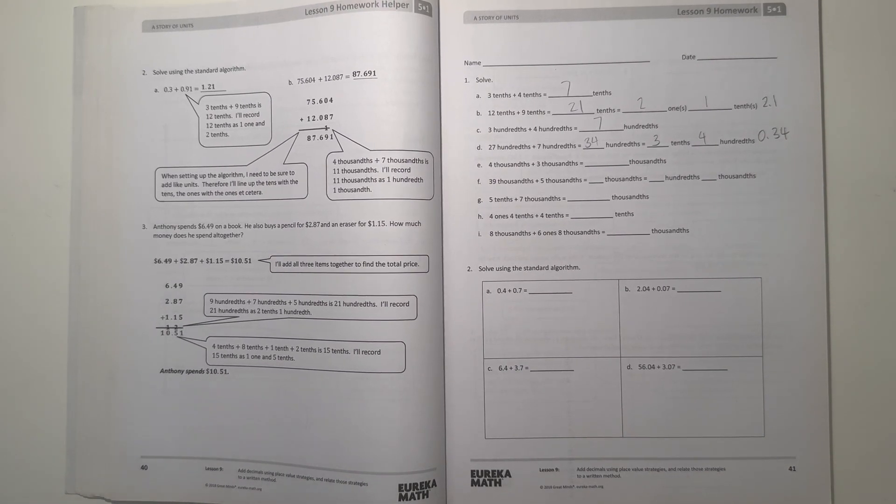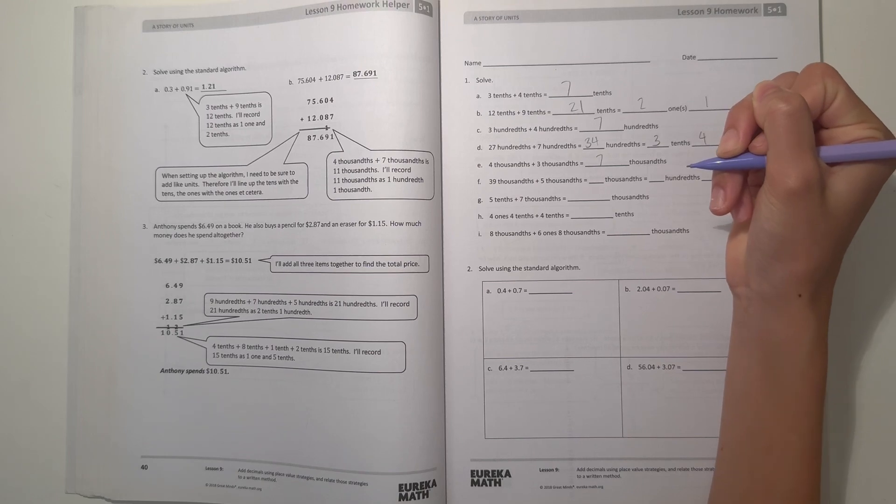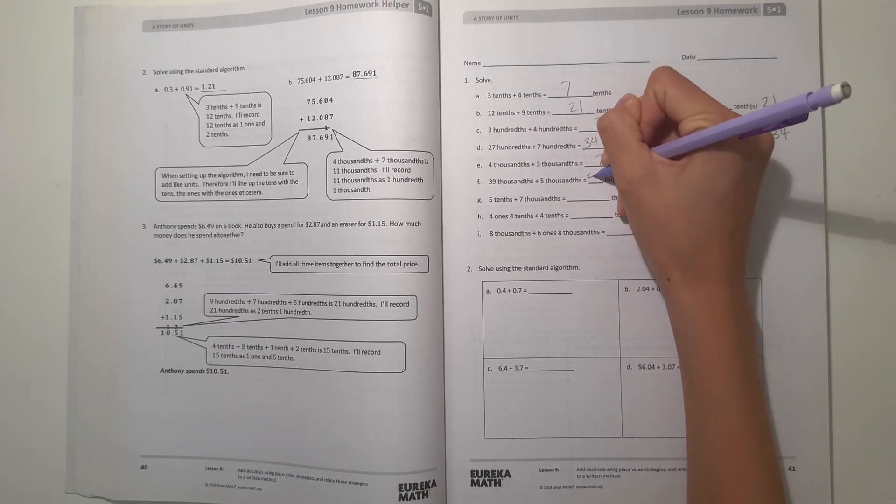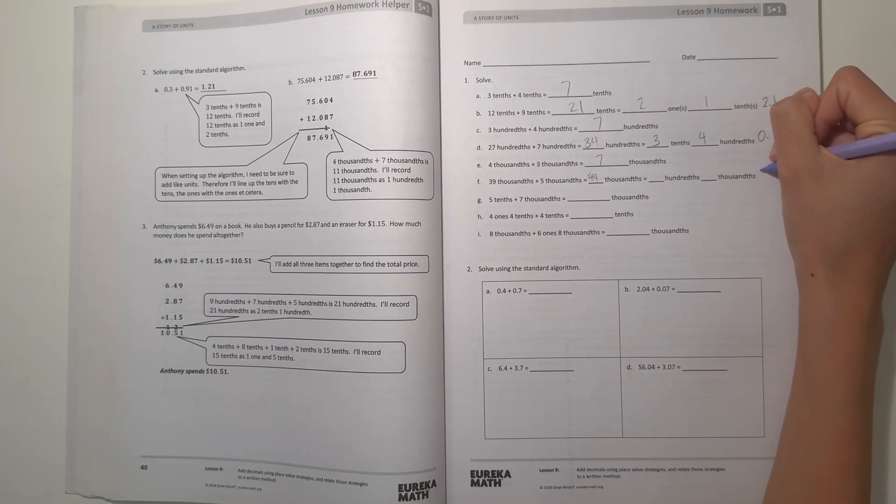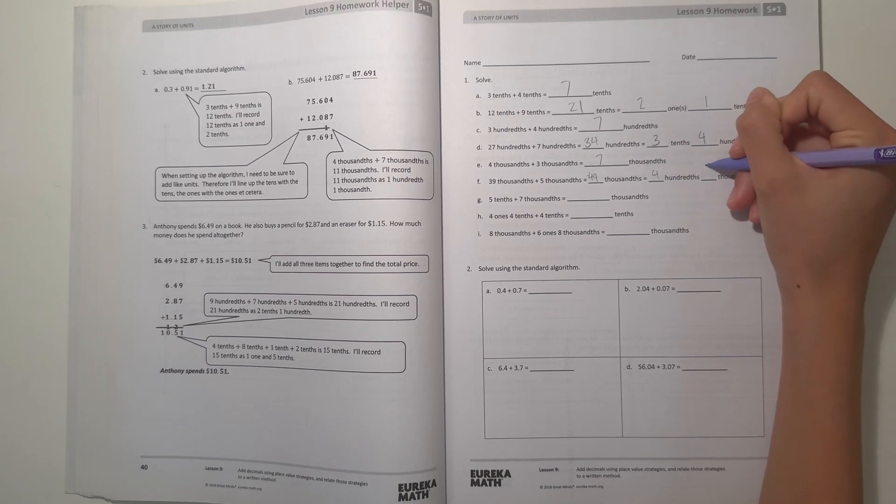And E, we have thousandths. So 4 thousandths plus 3 thousandths equals 7 thousandths. But then 39 plus 5 is 44 thousandths. And that number will be written like 0.044. So it has 4 hundredths and 4 thousandths.